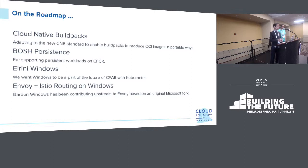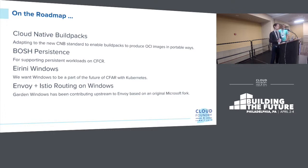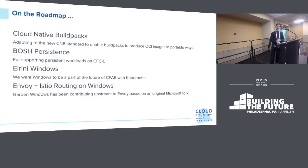On our roadmap: cloud-native build packs, which has been all the rage at this Cloud Foundry Summit — definitely looking to contribute Windows support into that. Persistence on Bosch for Windows VMs, to enable persistent workloads on CFCR and Kubernetes deployed with Bosch. Irene Windows — this is going to be the future of CFAR container scheduling, and we definitely want Windows to be part of that story. And Envoy and Istio routing on Windows — the Garden Windows team has been contributing upstream to Envoy based on an original Microsoft fork, and once that support is production-ready, that's the gateway to Istio.